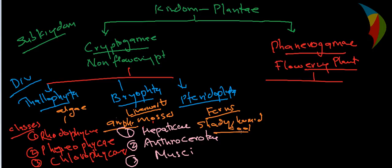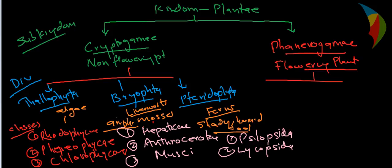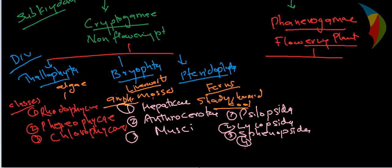In the same way, Pteridophyta can be divided into four classes. The first is Psilopsida, the second is Lycopsida, the third is Sphenopsida, and the fourth is Pteropsida. So Thallophyta has three classes, Bryophyta has three classes, and Pteridophyta has four classes.